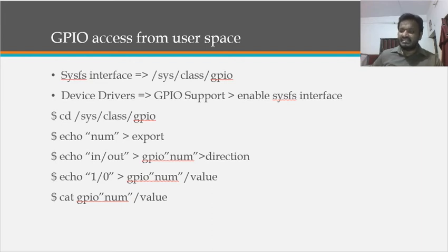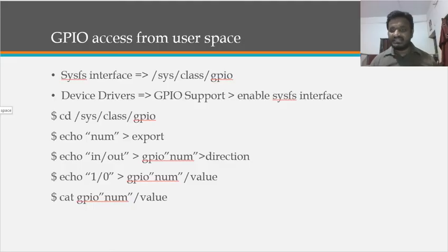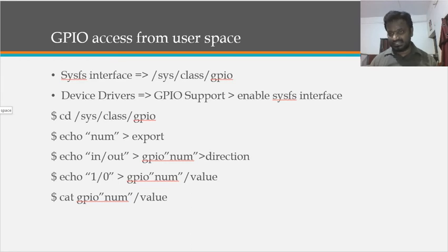The sysfs interface will be available in the folder directory /sys/class/gpio. We can see over the terminal something like sys/class/gpio, which contains GPIO class-specific files. We can create or export a GPIO number in order to get GPIO access — for example, by echoing the GPIO number into the export file.